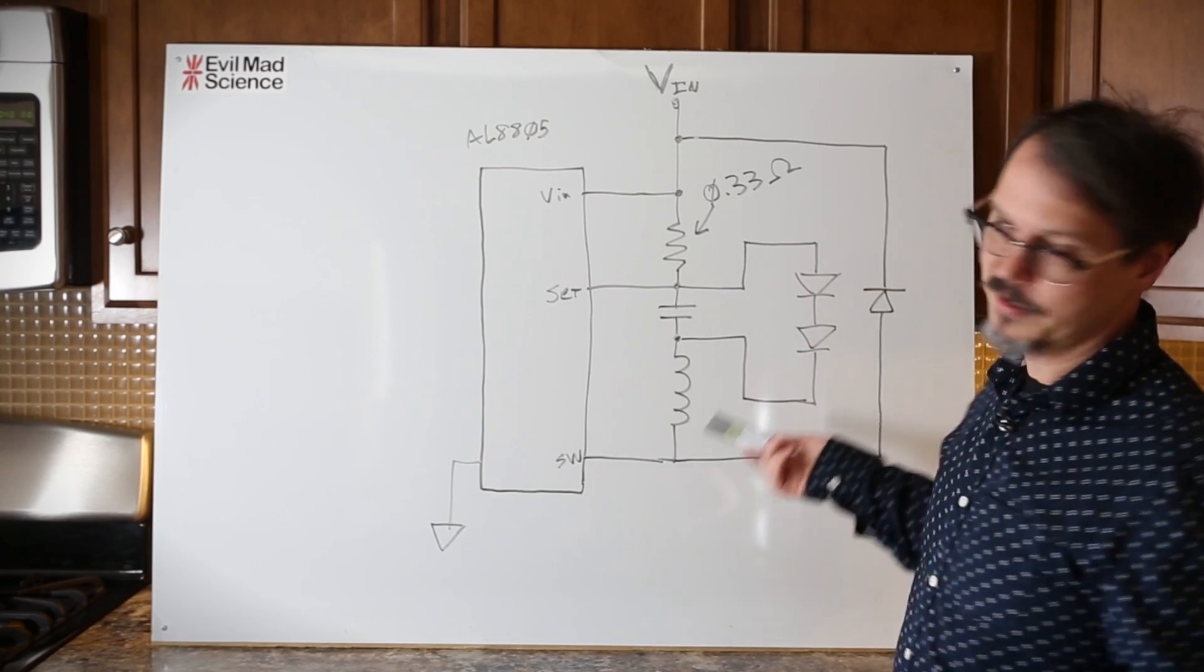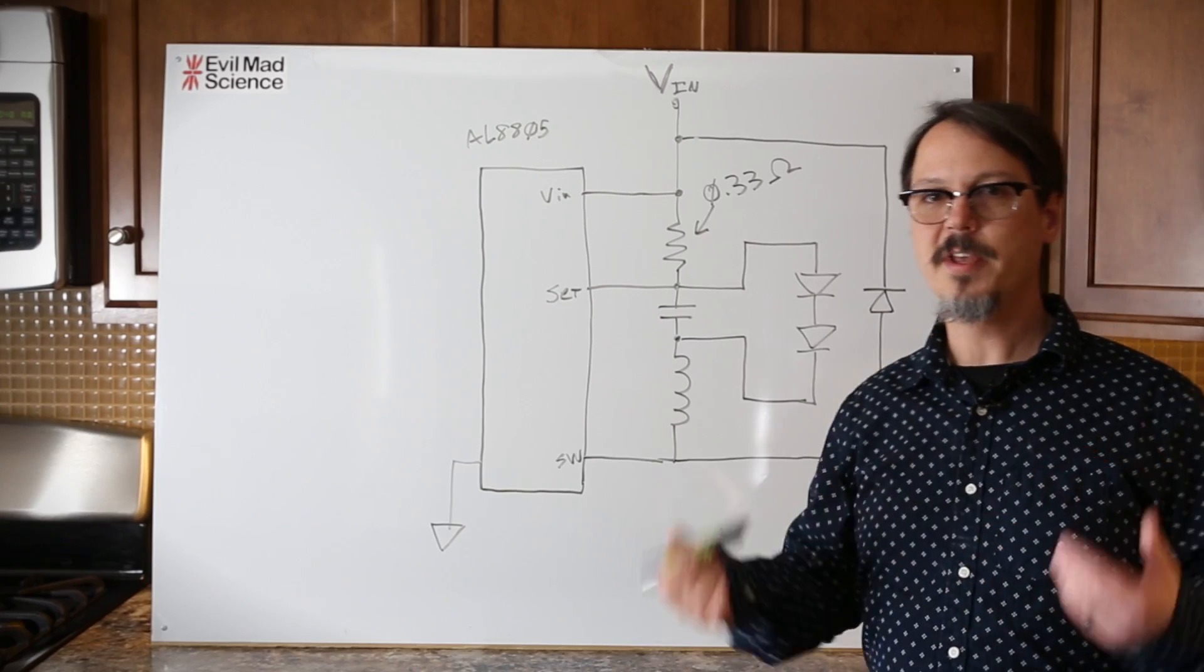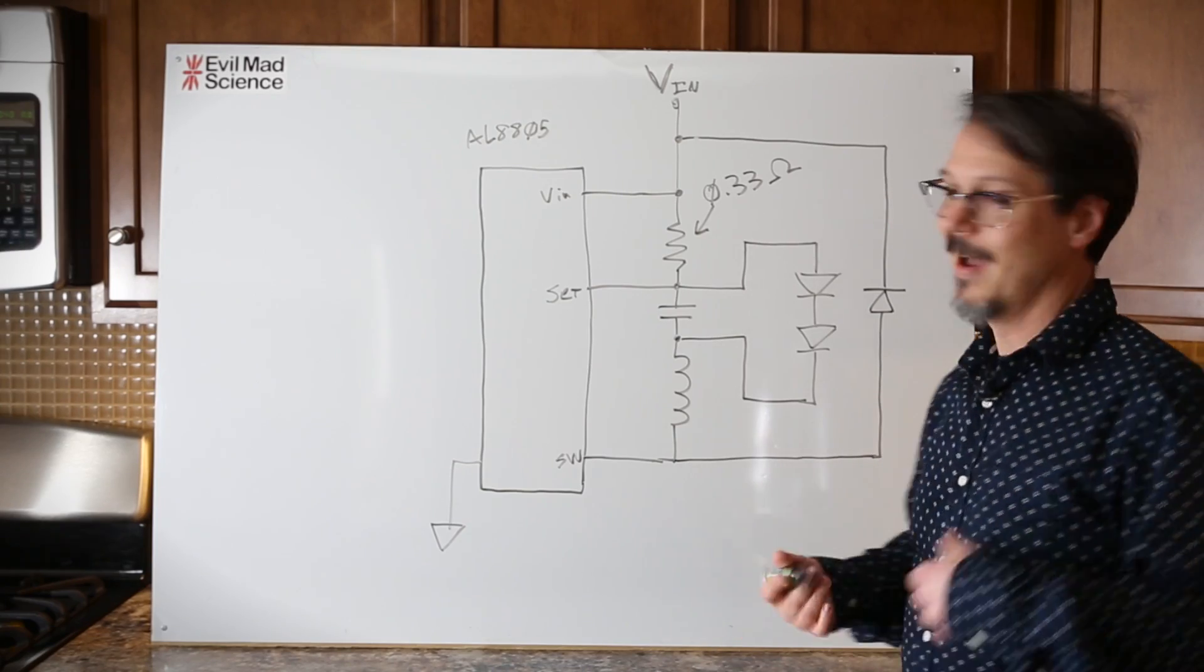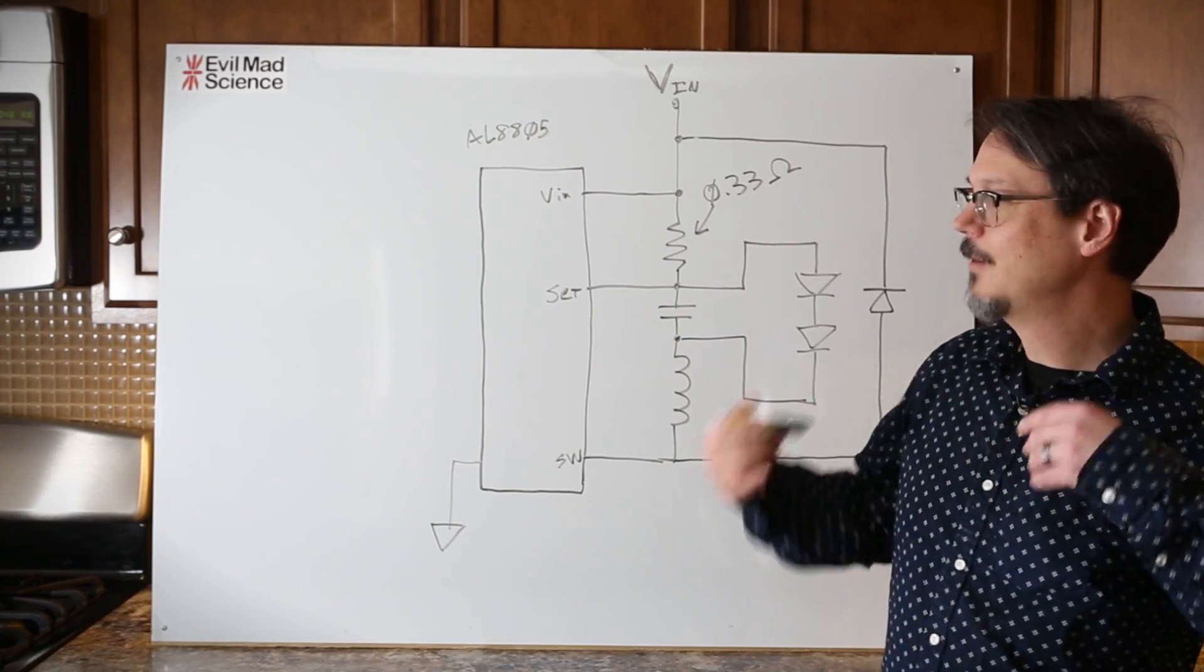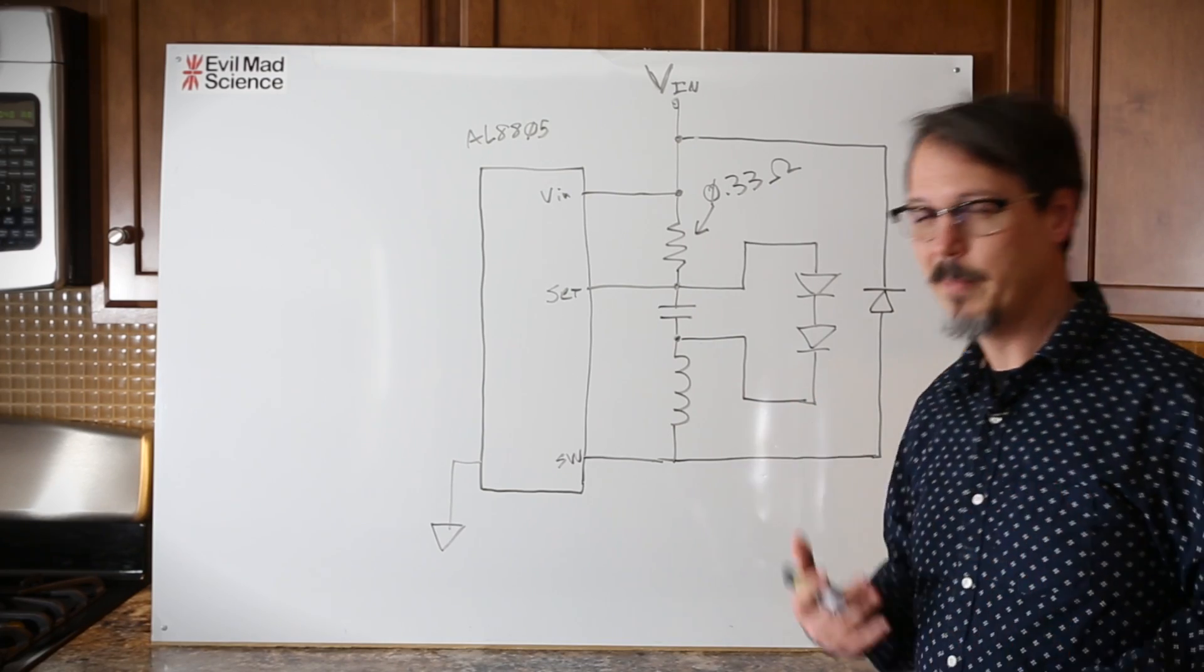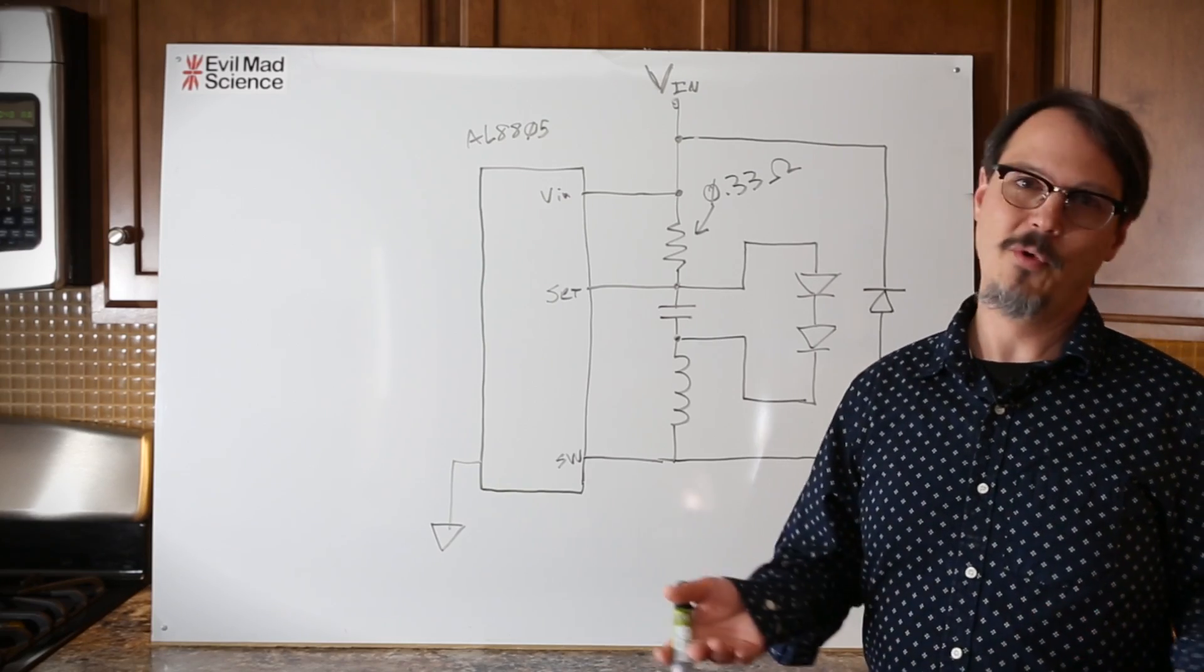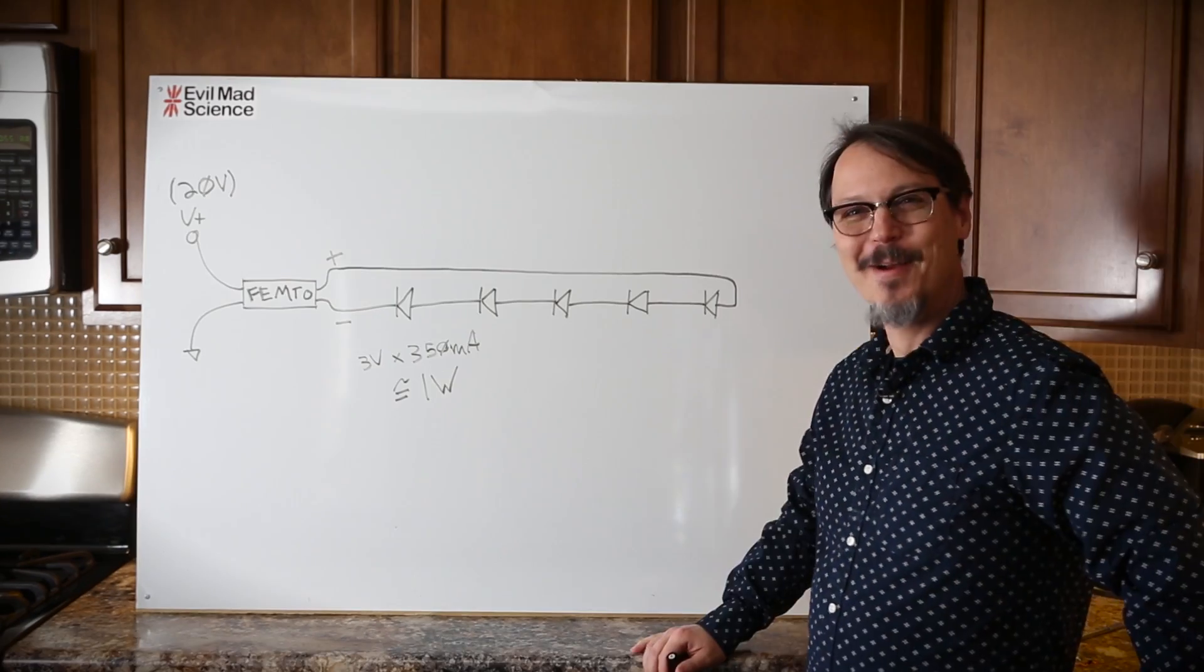So constant current drive. In the case of the femtobuck, we set it at 350 milliamps. I know that's not the full capability of the LEDs, but we were sort of shooting for something that you could augment if you wanted to and would greatly extend the life of the three-watt LEDs that you're driving.